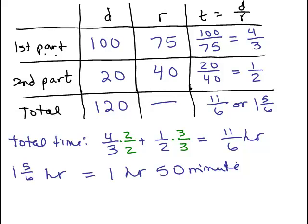Because 5 sixths of an hour is 50 minutes, 5 sixths of 60 minutes is how you get that. So that is the total time.